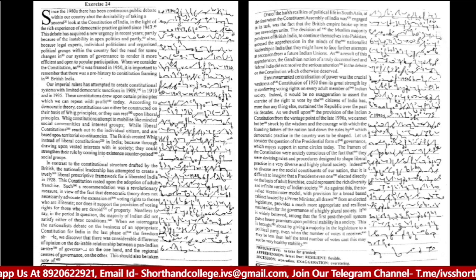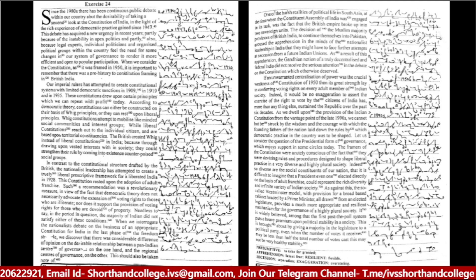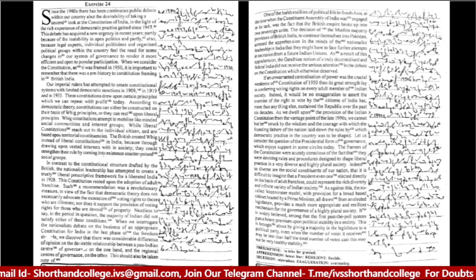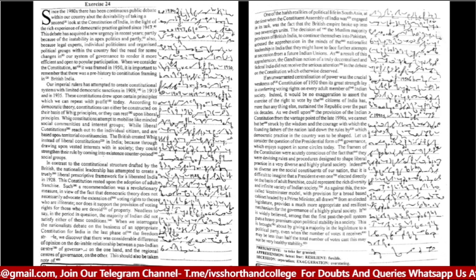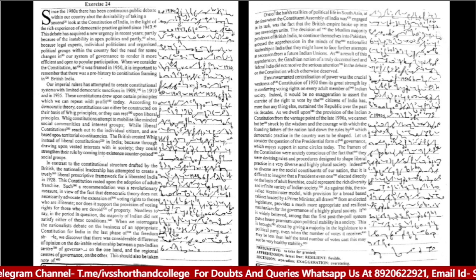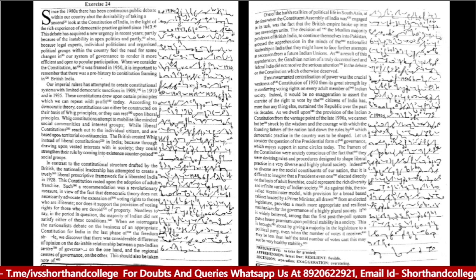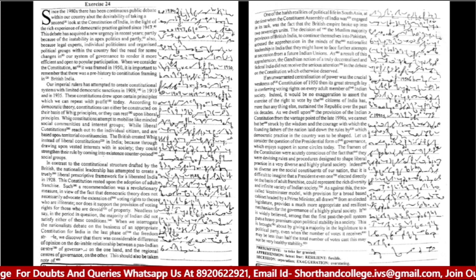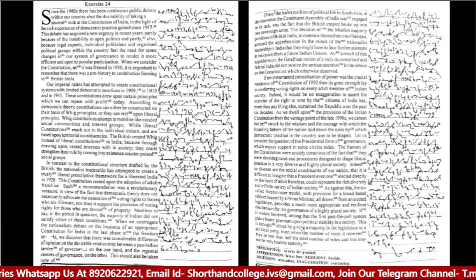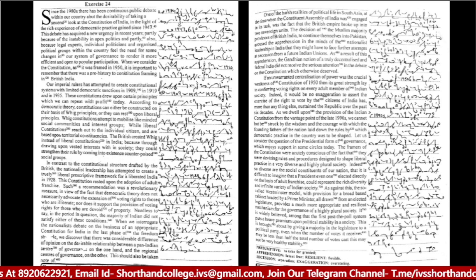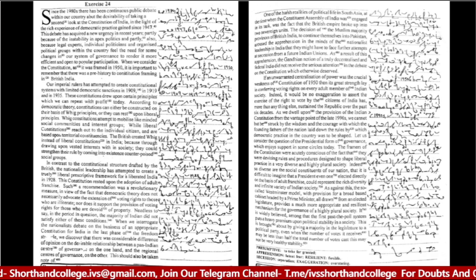In contrast to the constitutional structure drafted by the British, the nationalist leadership attempted to create a truly liberal restrictive framework for a liberated India in 1928. This constitution rested upon the adoption of adult franchise. Such a recommendation was a revolutionary measure in view of the fact that democratic theory does not necessarily advocate the extension of voting rights to those who are illiterates, nor does it support the provision of voting rights for those who are devoid of property.